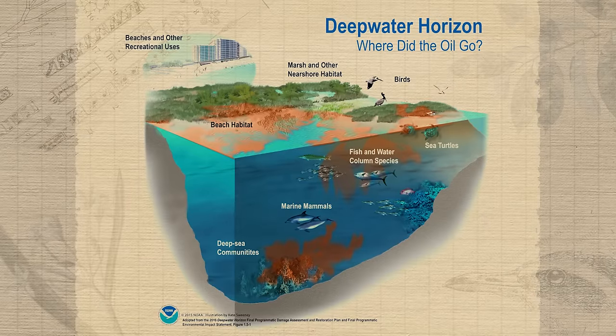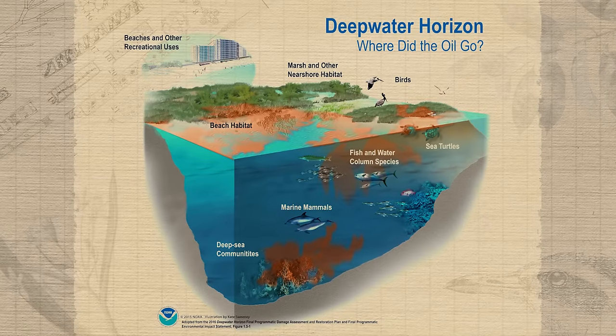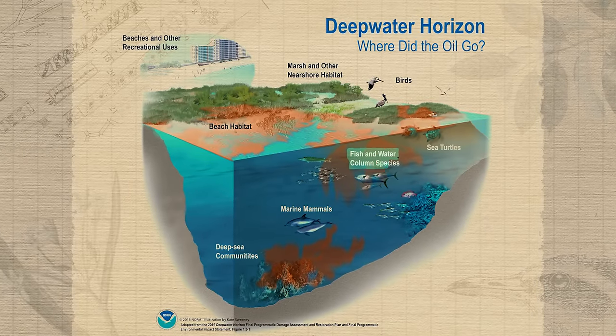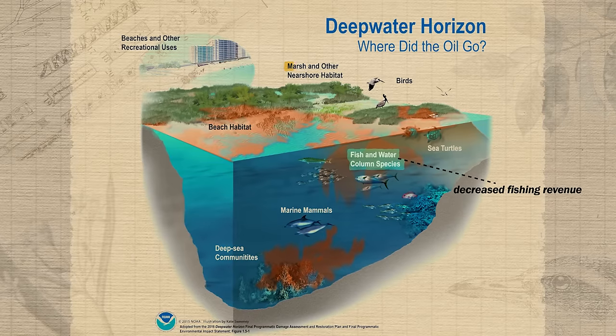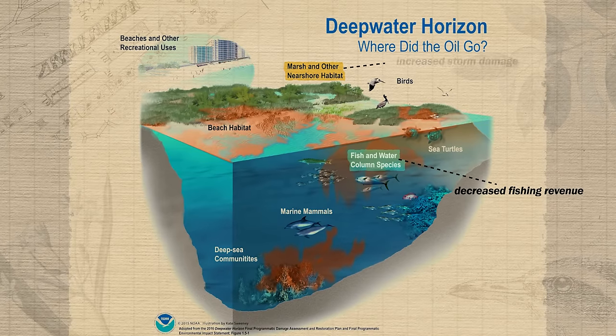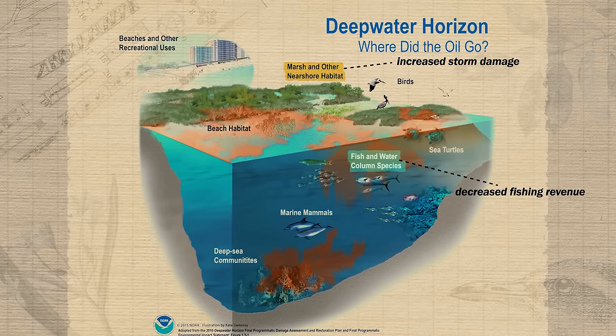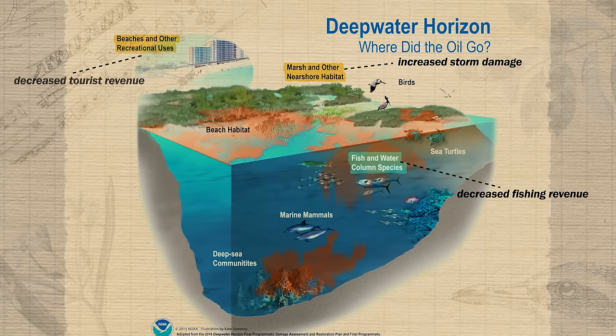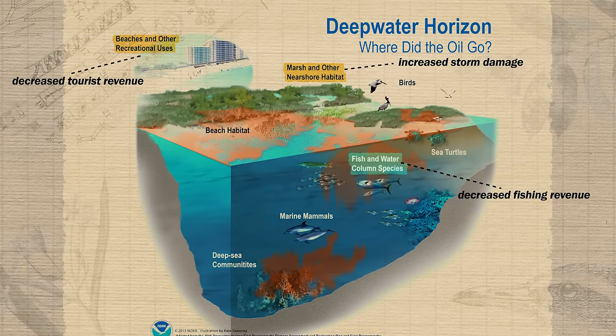In addition to identifying the four categories of ecosystem services, we also want to understand how humans can disrupt them. A great example is drilling for and transporting crude oil. When the Deepwater Horizon oil spill happened in the Gulf of Mexico, a ton of ecosystem services were disrupted: fishermen couldn't catch as many fish and their profits suffered, mangrove swamps and salt grasses died which destabilized the coastline and led to more storm damage, and the tourism industry was impacted as beaches were covered in oil.